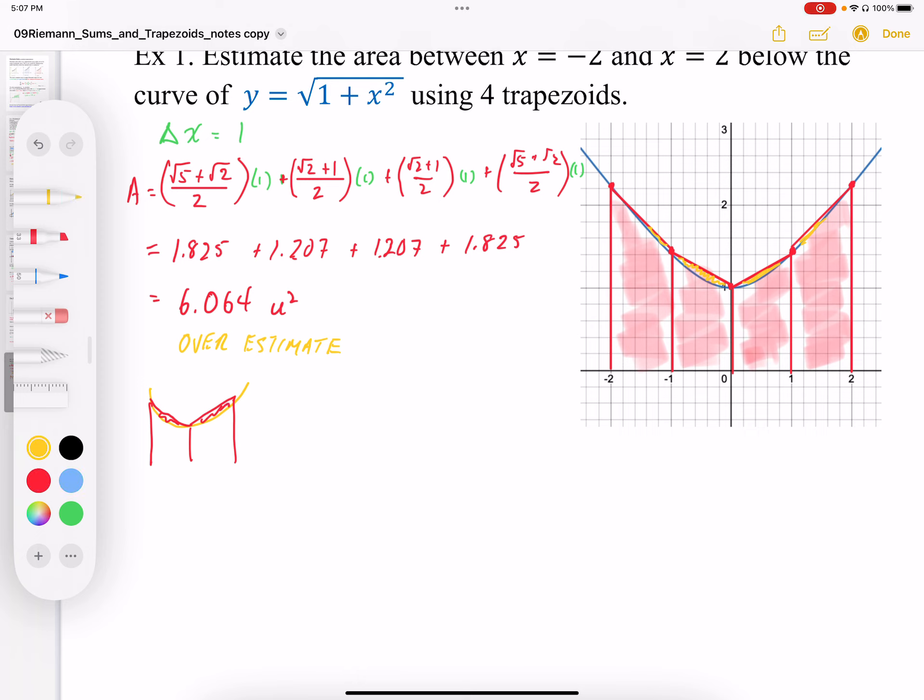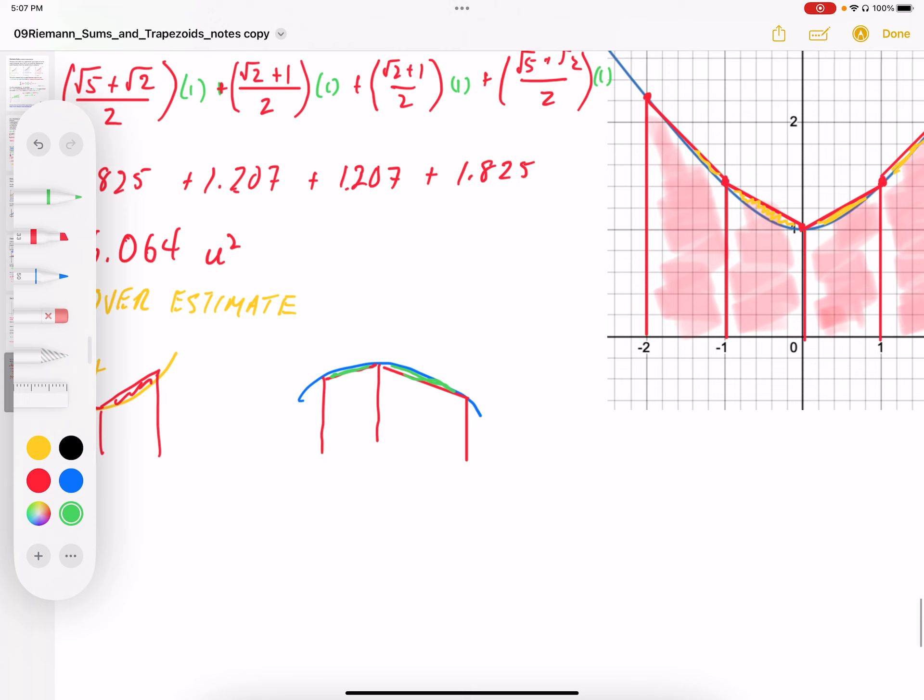If we are concave down, so that's concave up. If we are concave down, the opposite is then now true. If we have concave down, our trapezoids then are underestimates. Because we have this little bit extra above the trapezoid, which is not part of the curve.